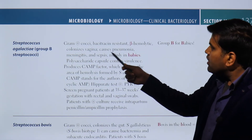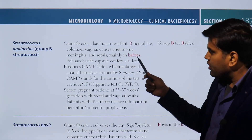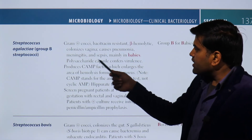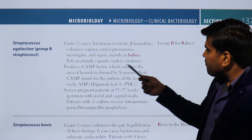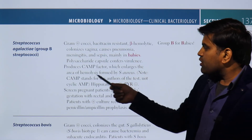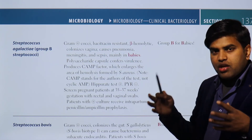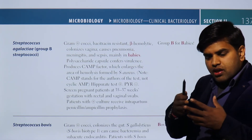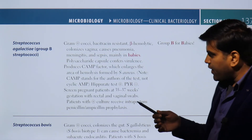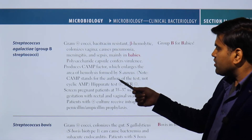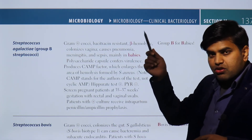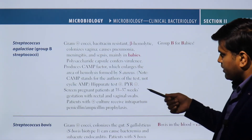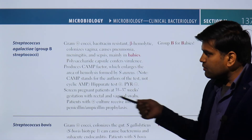Streptococcus agalactiae colonizes the vagina and causes pneumonia, meningitis, and sepsis mainly in newborns. It has a polysaccharide capsule as its virulence factor and produces the CAMP factor, which enlarges the area of hemolysis formed by Staphylococcus aureus. Note: CAMP stands for the authors' names, not cyclic AMP. It is CAMP test positive. This organism is critically important in the context of pregnancy and delivery.